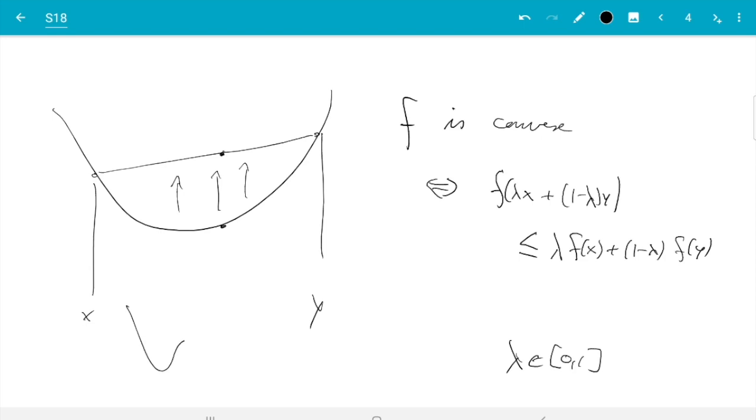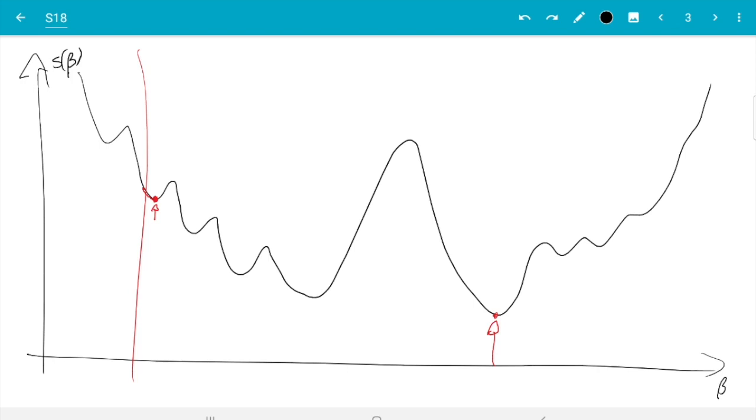And if functions are convex, you already see they cannot have wiggles like that. Because in this case, I can find a line here where the function value is above. That's not convex. And for the same reason, that function is definitely not convex. I can draw a line here. That function value is above.